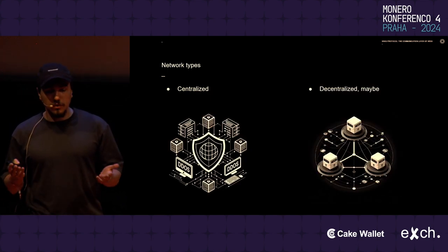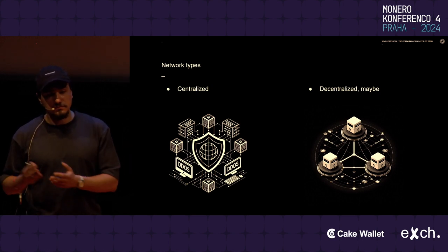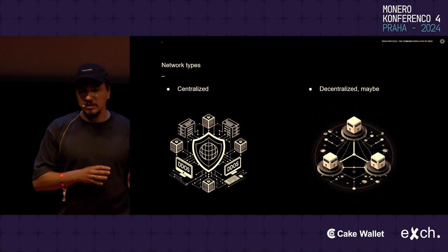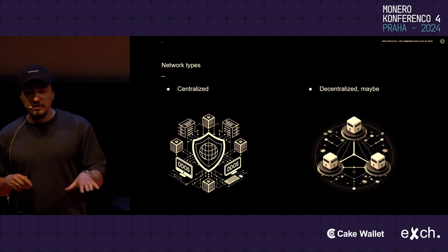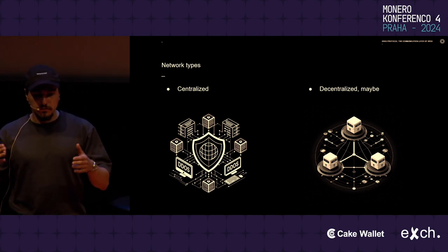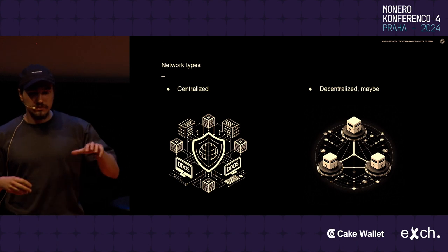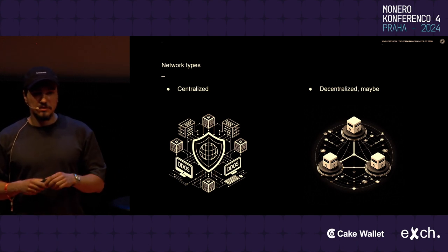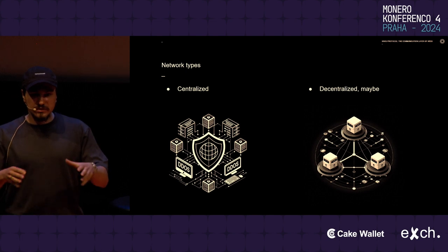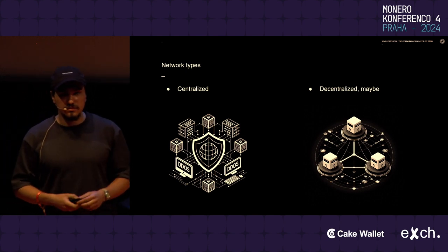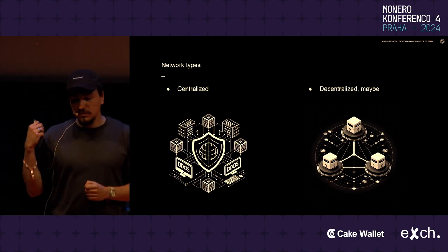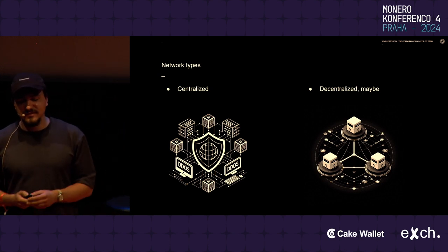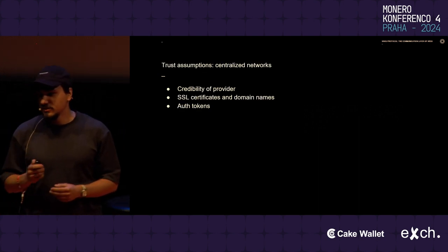Network types — two opposite ones: centralized and decentralized. Why 'maybe'? Because it can be implemented in one way or another. A network can be decentralized in the real world with many computers, but still centralized, meaning there is a spread central entity governing it. Or it can be just one computer claiming to be decentralized. There are many cases of that.